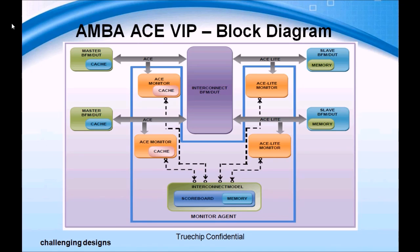Let's have a look at the ACE VIP architecture. The VIP provides BFMs for master, slave, and interconnect. Each bus has a dedicated monitor agent which samples transactions and keeps an eye on the bus activity for protocol adherence. The data sampled by each monitor agent is sent to the interconnect model for scoreboarding and checking transaction routing for system-level coherency.